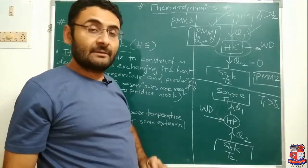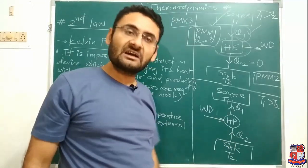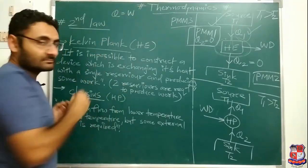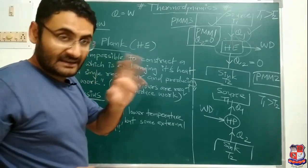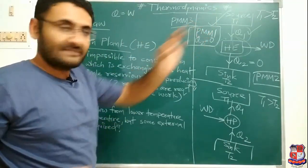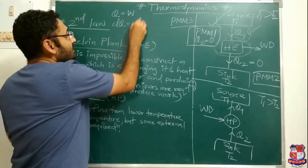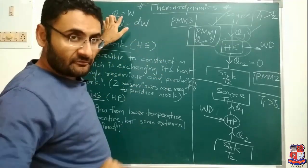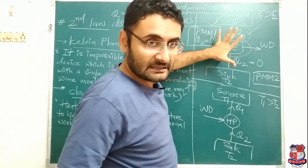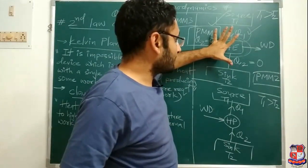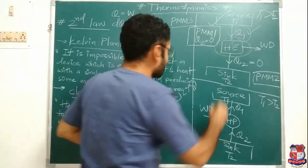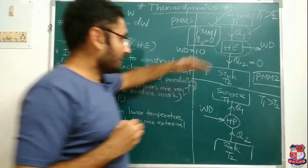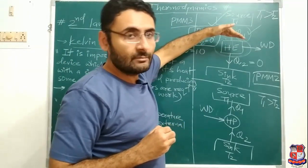In my previous video I talked about some corrections to the first law. As you know, q = w for a single process. Now consider the heat engine diagram: q1 is absorbed from the source and q2 is rejected to the sink, so total heat q = q1 + q2. Since T1 > T2, q1 is greater than q2 — suppose q1 = 7 and q2 = 3, so q = 10.